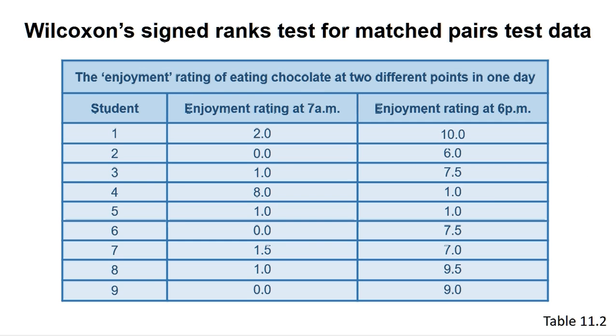The Wilcoxon's signed ranks test for matched pairs is performed on two samples where the same individual is measured twice under different conditions. In this case, our data concerns self-assessed enjoyment of chocolate at two times of the day.